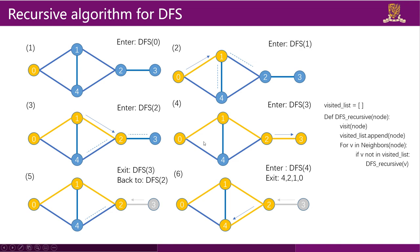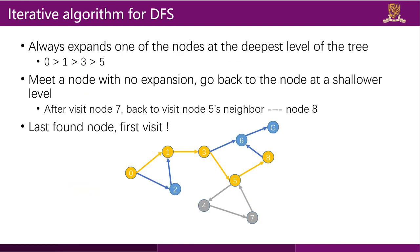There is also an iterative algorithm for DFS. From the two characteristics of DFS — always expanding the deepest node — when node 0 has children 1 and 2 and we choose node 1, we find node 1 has child node 3 and go there directly. We always visit the node we found last. When we hit a dead end, we go back to a shallower level. This is a last-found-first-visit manner.